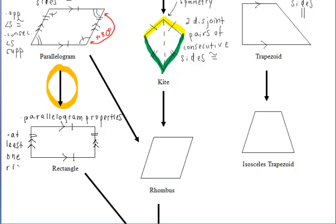In a rectangle, we have right angles. If we have at least one right angle in our parallelogram, we can call it a rectangle — because if one right angle is there, the opposite angle must also be a right angle, and since consecutive angles are supplementary, all four angles of a rectangle are right angles.